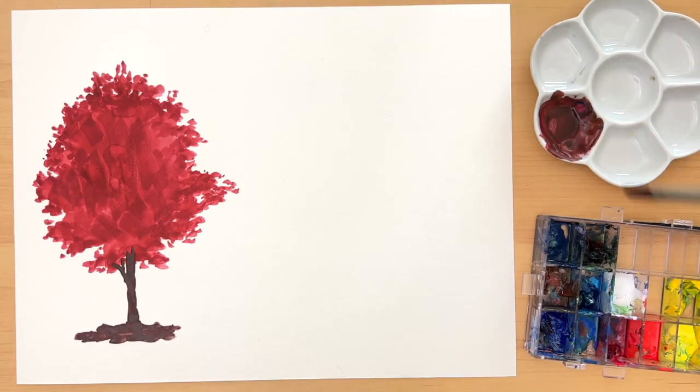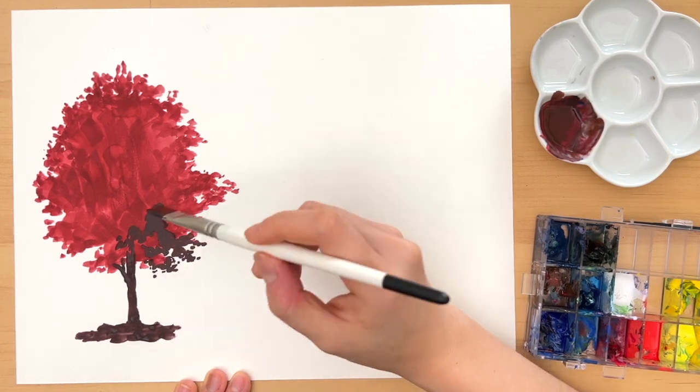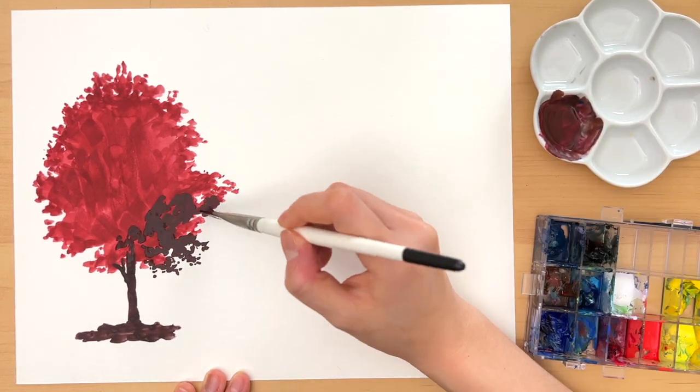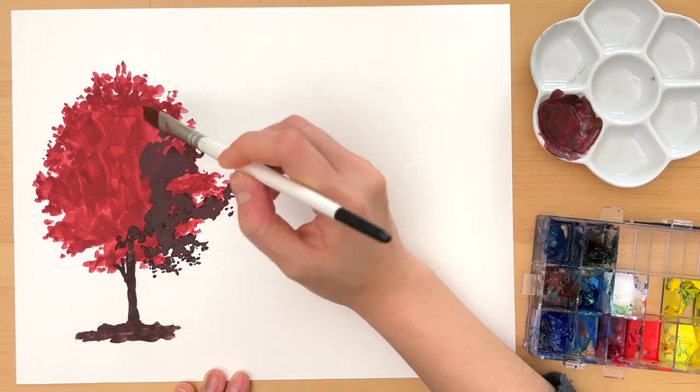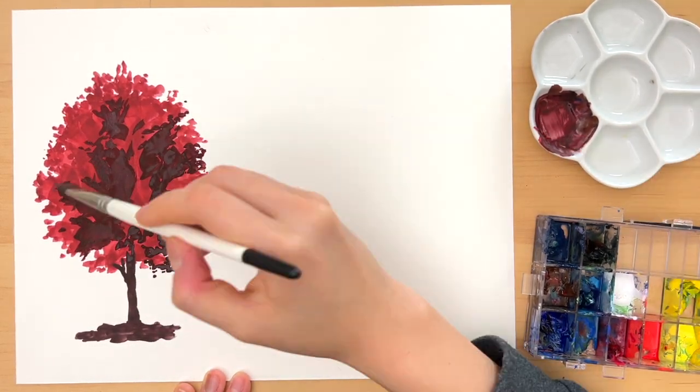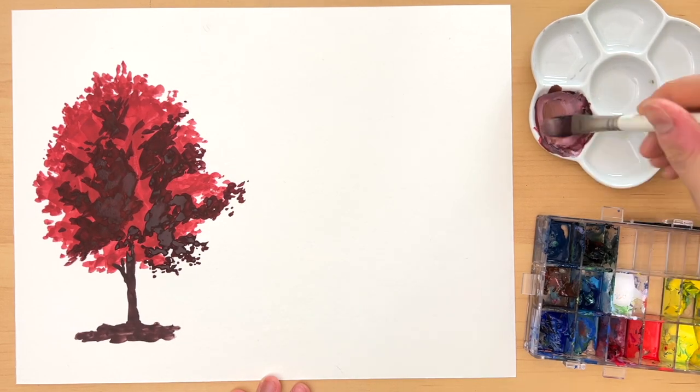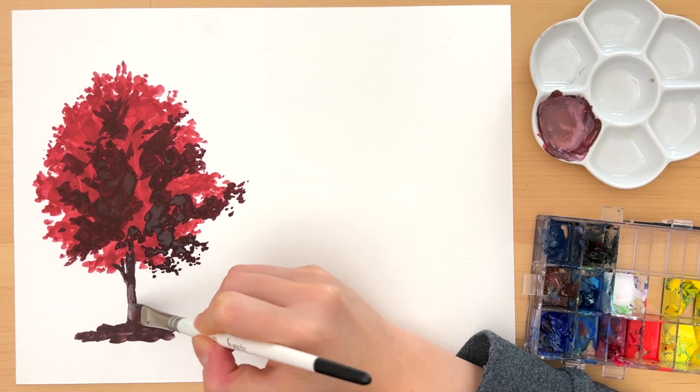You definitely want to determine where your light source is and paint your shadow accordingly. In this example, my light source is in the front but to the left side a little bit, so my shadow will be mostly on the right side and in the middle of the tree. Also, make sure the shadow and light on your tree matches the one on the leaves.